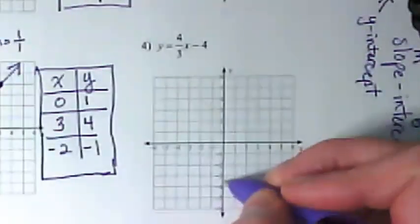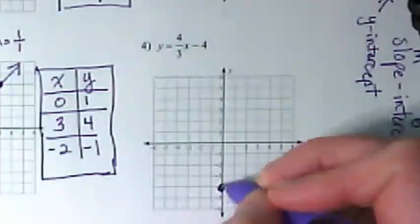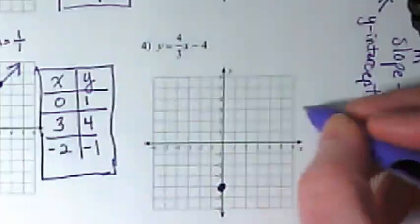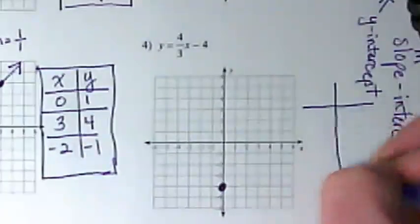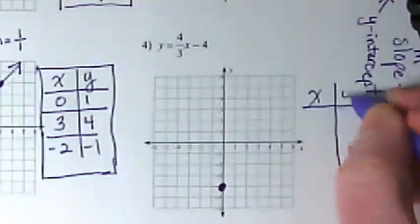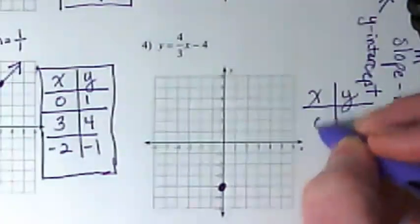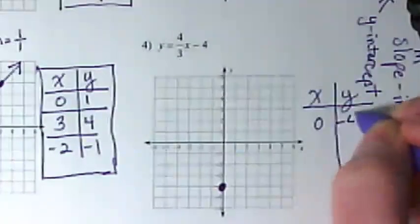Okay, let's look at number four. Tell me where to start. Negative four, thank you, because of this. I'm going to make the x-y table while we go this time. This point that we just put on is zero comma negative four, so it's going to go on our table as zero, negative four.